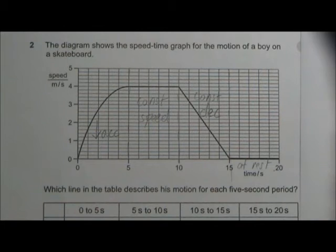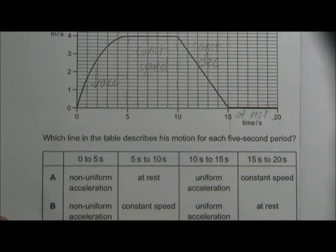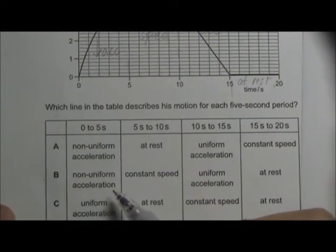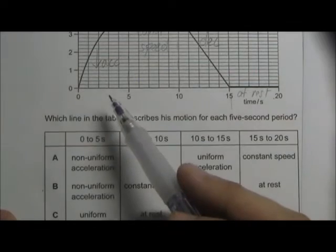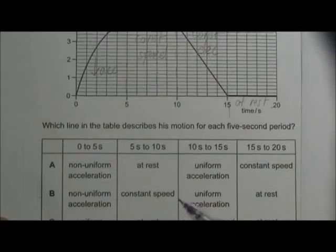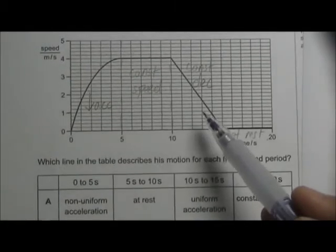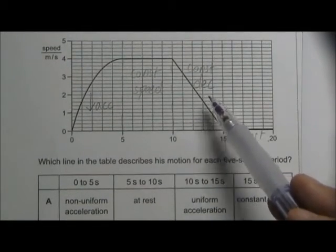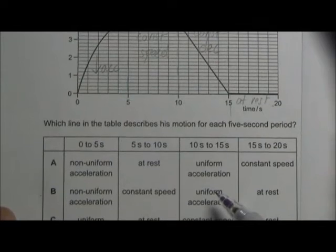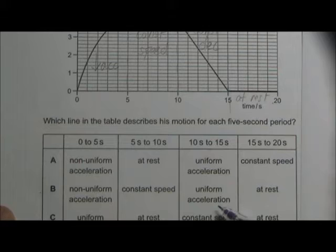Now let's look at the options that are available. The answer should be B. The first part is decreasing acceleration, so we can say that it is non-uniform acceleration. The second portion is constant speed, and the third portion is actually constant deceleration.